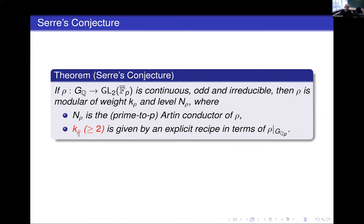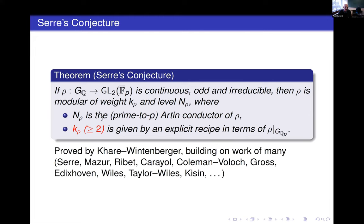The weight k_ρ and the level are both supposed to be in some sense optimal. This optimal weight k_ρ is given by an explicit recipe in terms of the restriction to a decomposition group at p, so it depends essentially on the ramification at p. An important aspect of the original version of Serre's conjecture is that the weight there is assumed to be at least two.